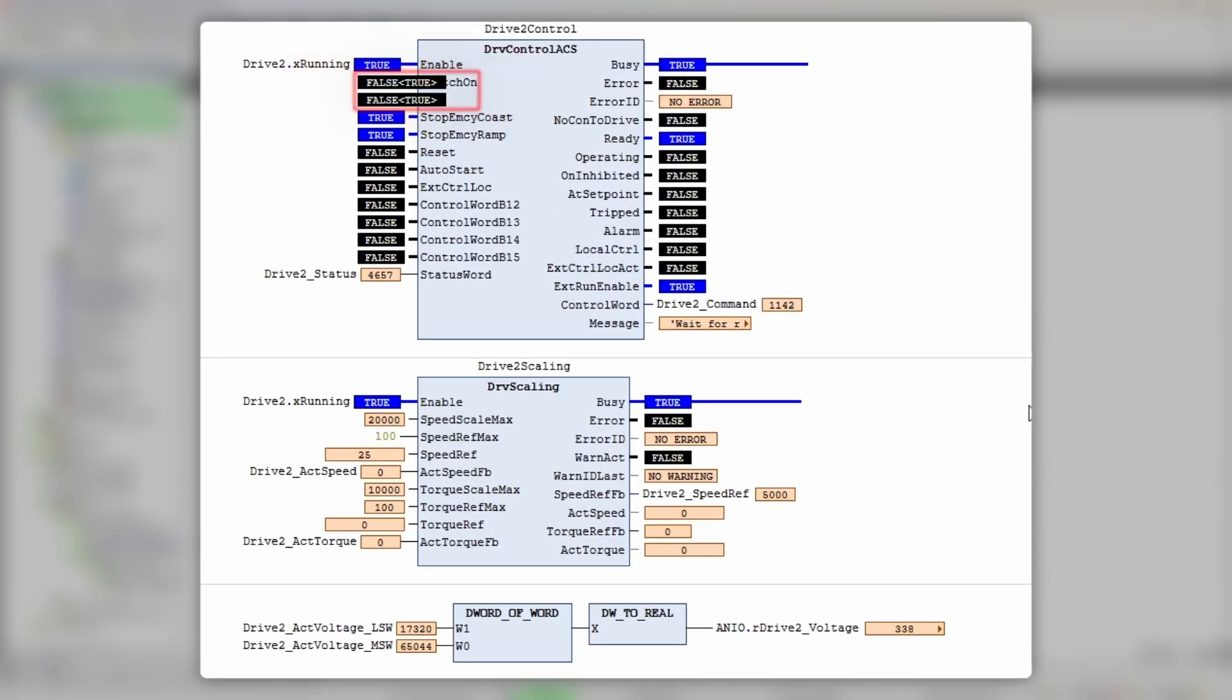And finally, let's do what we all came for here—start the drive. Set inputs switch on and run to true, write it. There you go, drive is operating. Actual speed after acceleration time has reached reference value. Output at set point indicates exactly that. Motor torque is fluctuating around 40 percent of nominal.